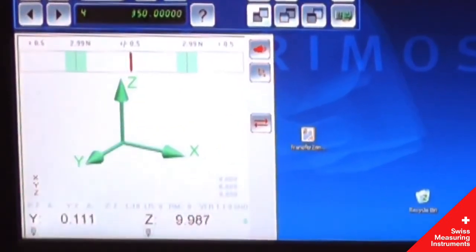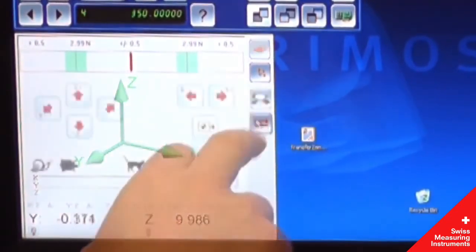On the bottom left, you see the control screen for the motorized axes, including automated measuring sequences.